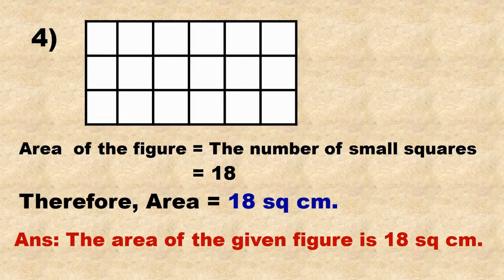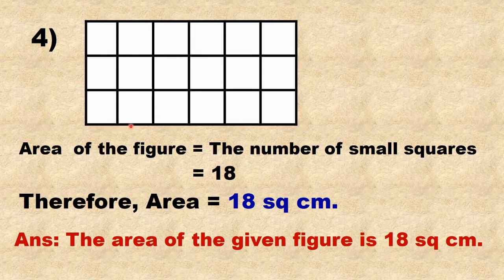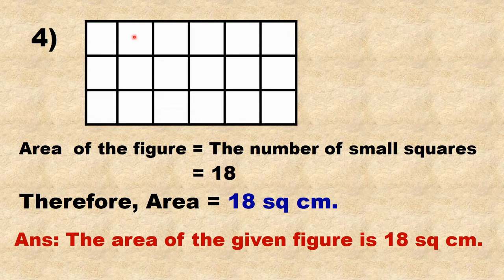Fourth example: the area of the figure equals the number of small squares. It is divided into squares with side 1 cm. Count the number of squares: 1, 2, 3, 4, 5, 6, 7, 8, 9, 10, 11, 12, 13, 14, 15, 16, 17, 18. There are 18 squares. Therefore, area = 18 square cm. The area of the given figure is 18 square cm.